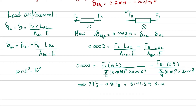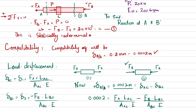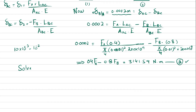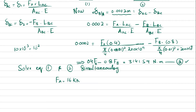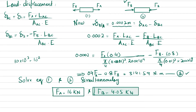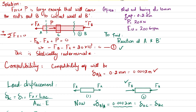Now solving equations one and two simultaneously, we get: FA equals 16 kilonewtons and FB equals 4.05 kilonewtons. Both values are positive, which means our assumed directions are correct. FA acts in its assumed direction and FB acts in its assumed direction.